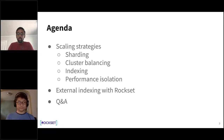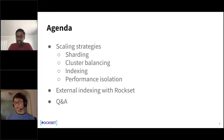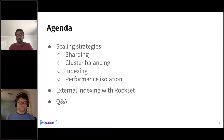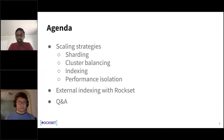Di will cover scaling strategies he used at Foursquare at massive scale, going over sharding, cluster balancing, indexing, and performance isolation as four major topics, with best practices on when to use them and common pitfalls. In the second section, I'll cover external indexing — how companies use Elasticsearch or other systems — and how you can do that with Rockset. We'll then finish with a Q&A session.